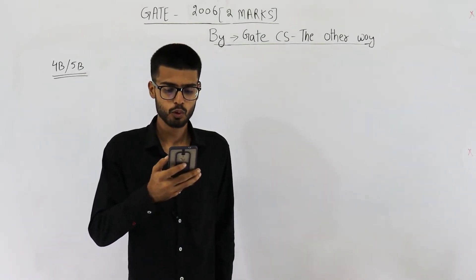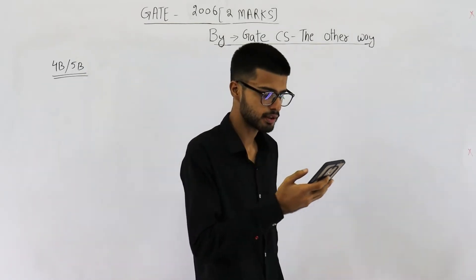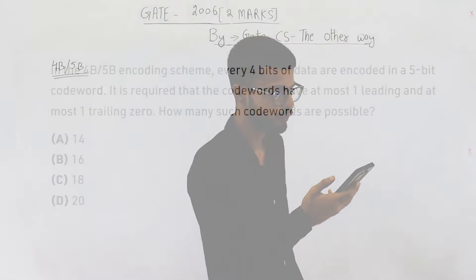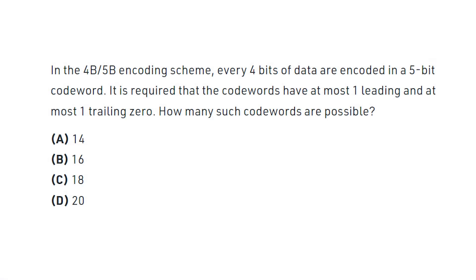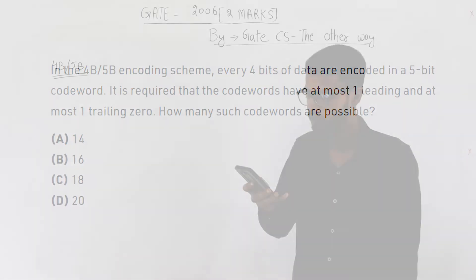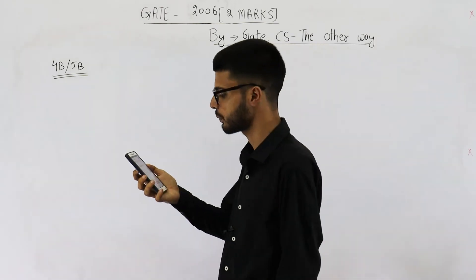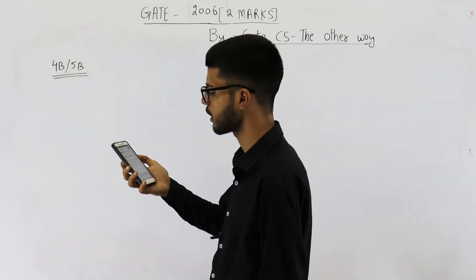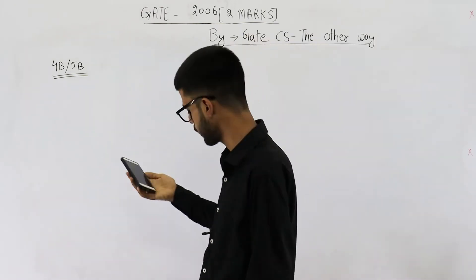In the 4b-5b encoding scheme, every 4 bits of data are encoded in a 5-bit codeword. It is required that the codewords have at most one leading and at most one trailing zero. How many such codewords are possible? The options are 14, 16, 18, and 20.